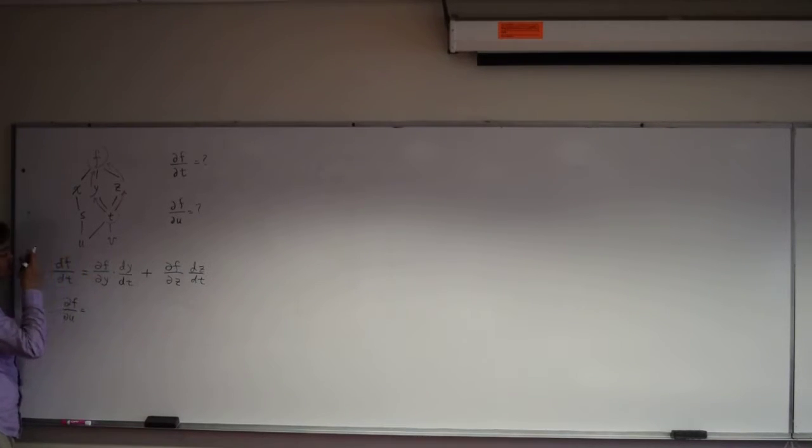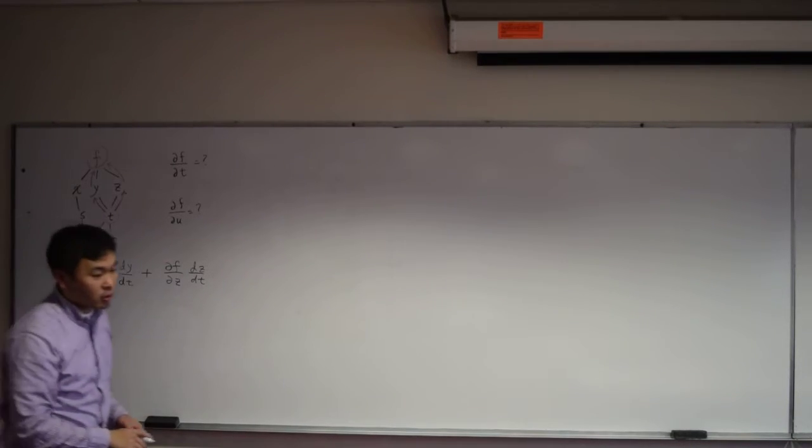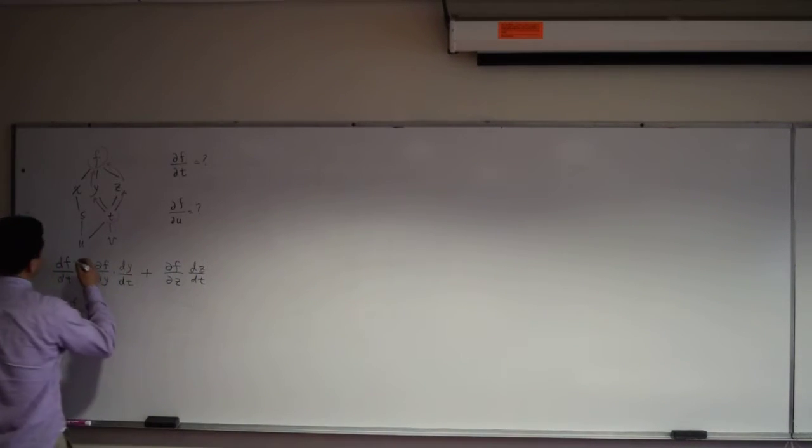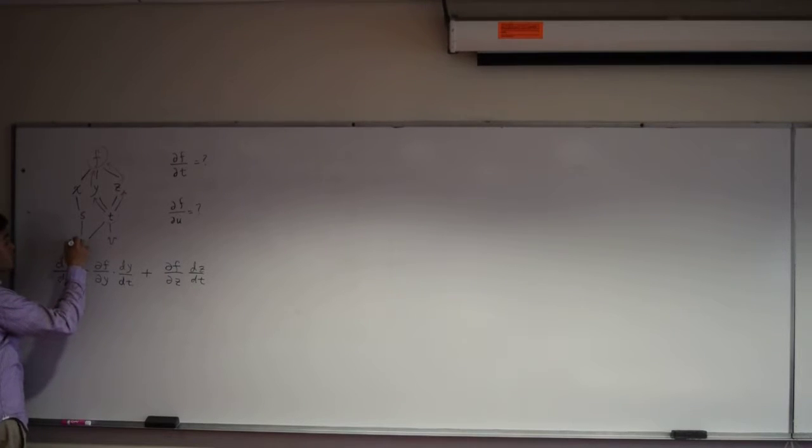How many ways does u affect f? Three different ways, right? If you think about all the ways or all the paths from u to f, this is one path, another path, another path. There are three different paths coming from u to f. So what you need to do is you have to write down the changes for each of these paths and you have to add them up.